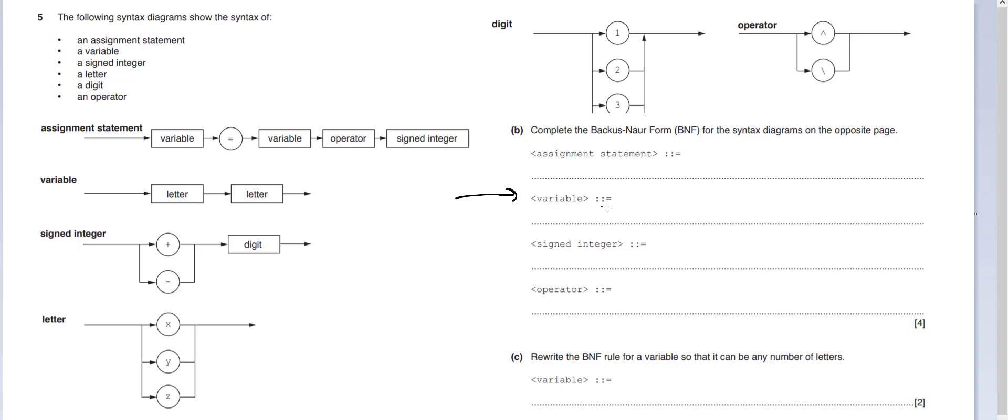Okay, so a variable is equivalent to a letter, a letter. So how do we know this? Well, quite easily, because of this diagram there. So it's quite limited. I want you to try and do assigned integer. So do assigned integer for me. Pause the video, give it a go.